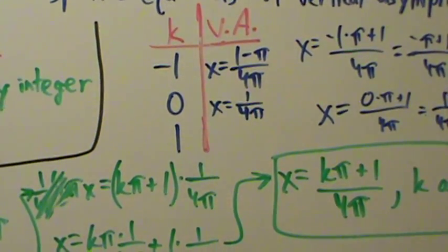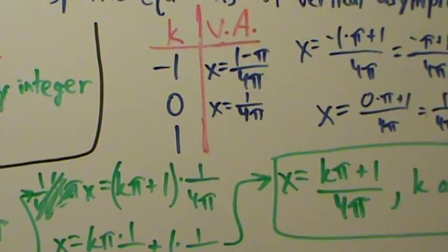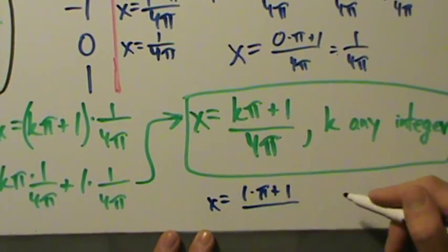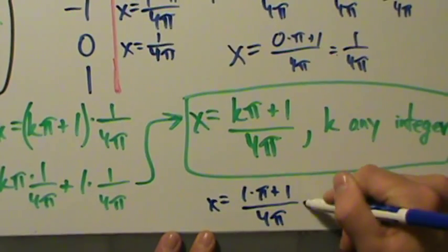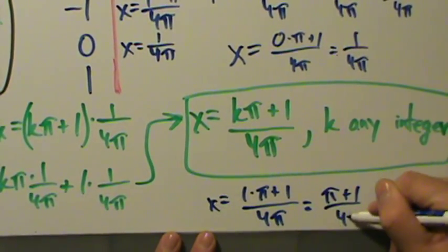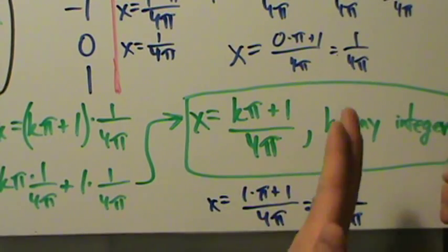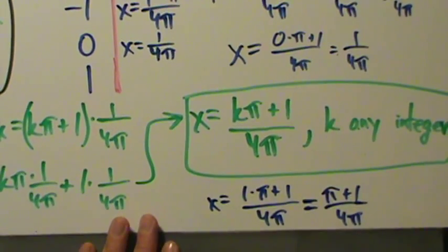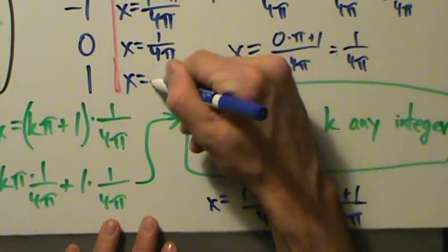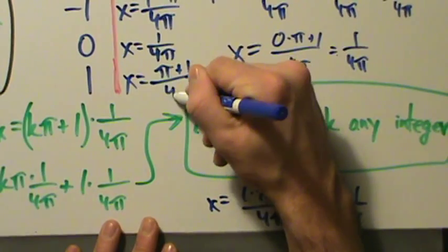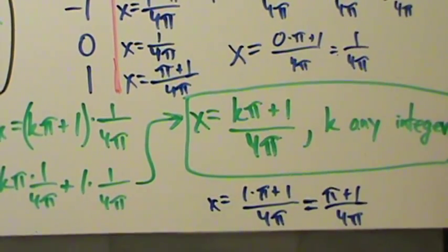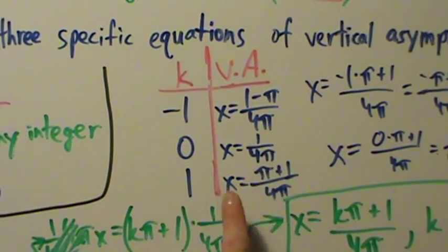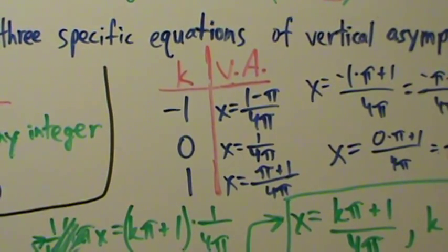When k = 0: x = (0·π + 1)/(4π) = 1/(4π). When k = 1: x = (1·π + 1)/(4π) = (π + 1)/(4π). You could also write this as (1 + π)/(4π) to make it symmetric with (1 - π)/(4π), but either form is fine.